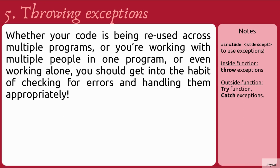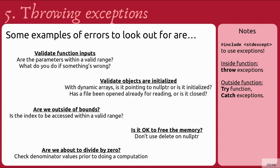Whether your code is being reused across multiple programs, or you're working with multiple people in one program, or even working alone, you should get into the habit of checking for errors and handling them appropriately. Some examples of errors to look out for: validating function inputs — are the parameters within a valid range? Validating that objects are initialized — for example, with a dynamic array, is the pointer pointing to null or is it initialized somewhere? If we're working with a file, has it been opened for reading, or is it closed? Checking whether we are outside of bounds, whether memory is okay to free before using the delete command, or making sure a denominator is not zero before doing division.